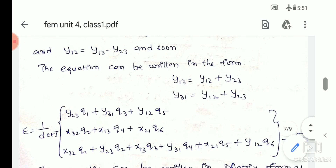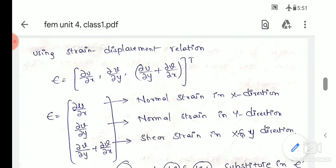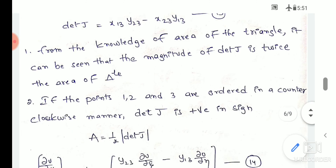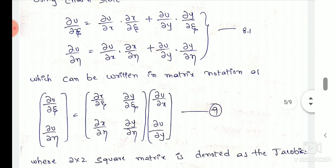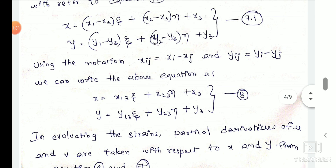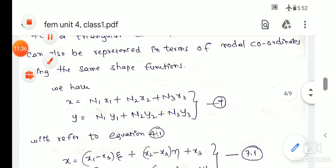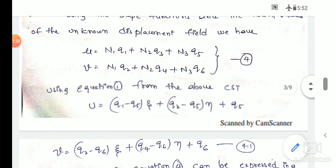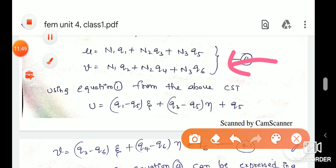The next important formula involves E (elastic modulus). The area is also important, as is the Jacobian matrix determinant. The coordinate equations are also formed in this step. All these formulas are important for solving CST problems. Thank you.